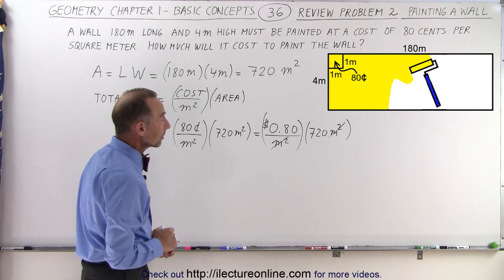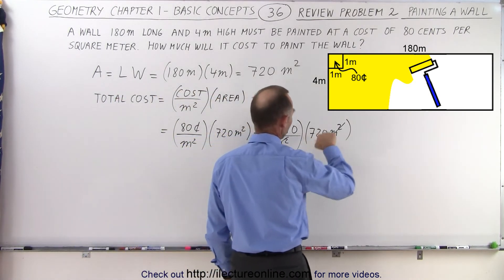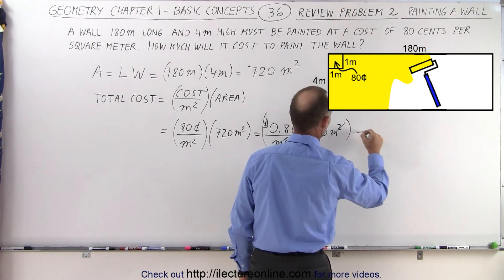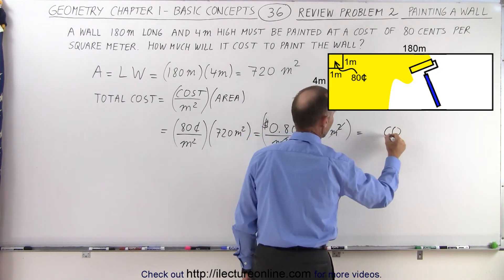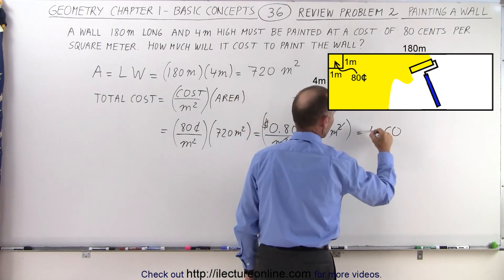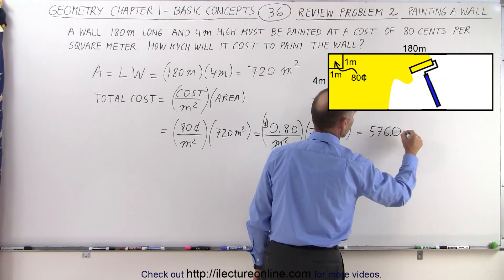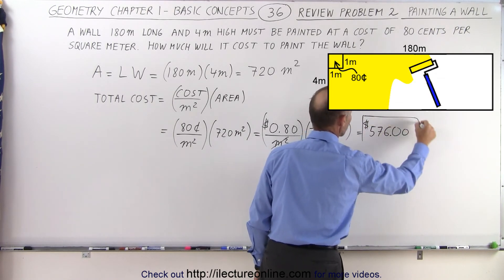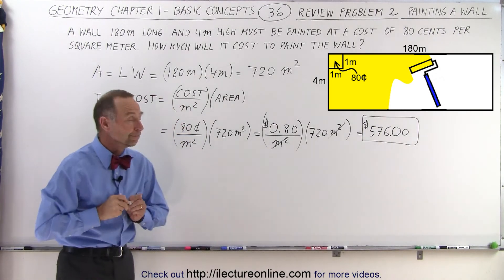Let's calculate: 8 times 7 is 56, then 2 times 8 is 16, carry the 1, and 7 times 8 is 56, making it 57. So the result is 576 dollars and 0 cents — that is going to be the total cost to paint the wall.